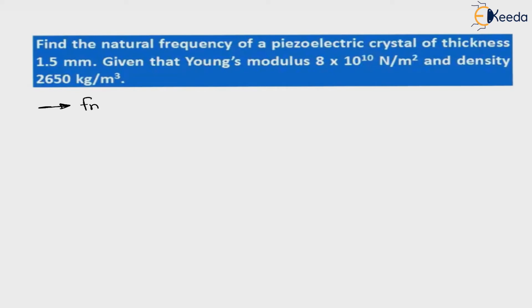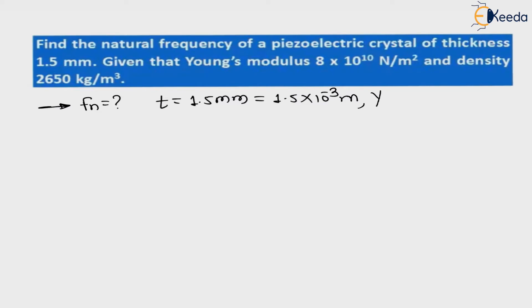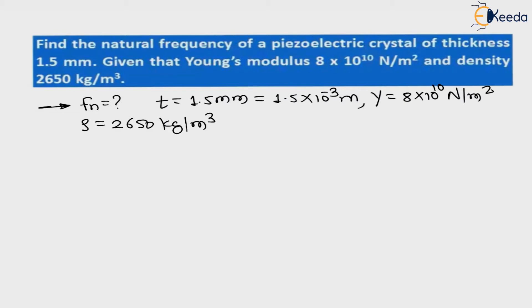The first question is on your screen: find the natural frequency of a piezoelectric crystal. We have to find the natural frequency fn. The thickness of the crystal is given as 1.5 mm, which is 1.5 × 10⁻³ meter. Young's modulus is given as Y = 8 × 10¹⁰ N/m². The density of this crystal is ρ = 2650 kg/m³.